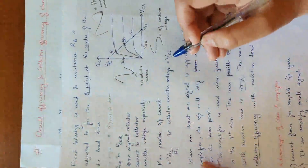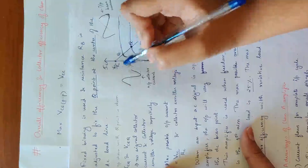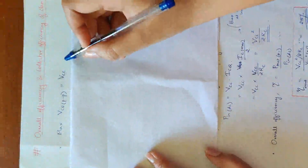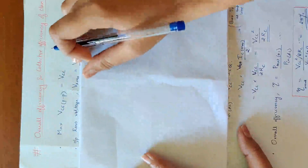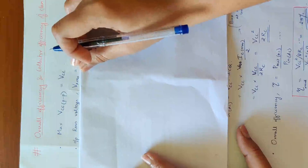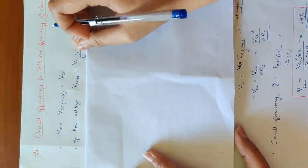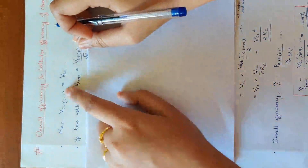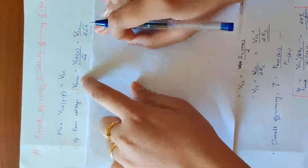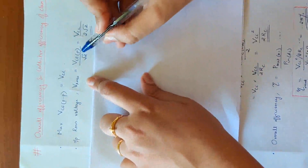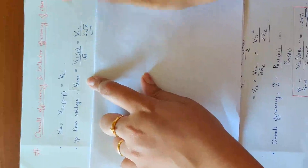From the DC load line: maximum output current is VCC/RC, maximum VCE collector-emitter voltage is VCC. VCC is the maximum peak-to-peak voltage. Peak-to-peak voltage is VCC, so peak voltage is VCC/2, and RMS voltage equals peak voltage divided by root 2, giving VCC/2 divided by root 2.